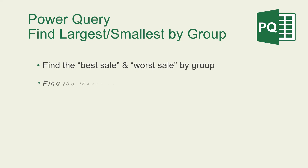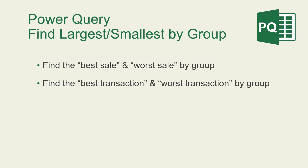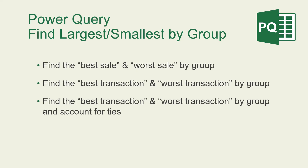We'll then expand that to find the best transaction or the worst transaction by group, where we retain the entire record — the entire transaction, not just the sale value. We'll then expand that to finding the best and worst transaction by group but also account for ties, so this third version will retain all ties if they exist.